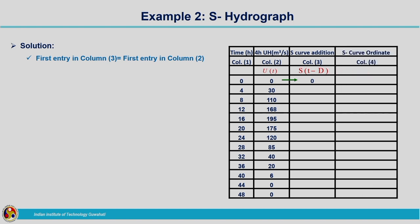Now we will get the S curve ordinate S(t), represented by column 4. S(t) is given by U(t) plus S(t−d). We have U(t) in column 2 and S(t−d) in column 3; their sum gives us the S curve ordinate. So column 4 is obtained by summing column 2 and column 3. Column 2 is the unit hydrograph ordinate and column 3 is the S curve addition. Adding these gives the ordinate corresponding to S(t).